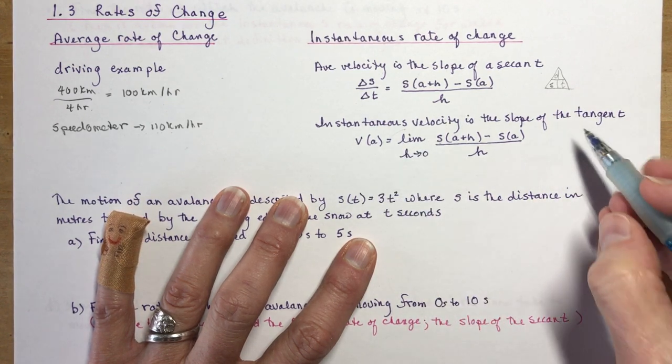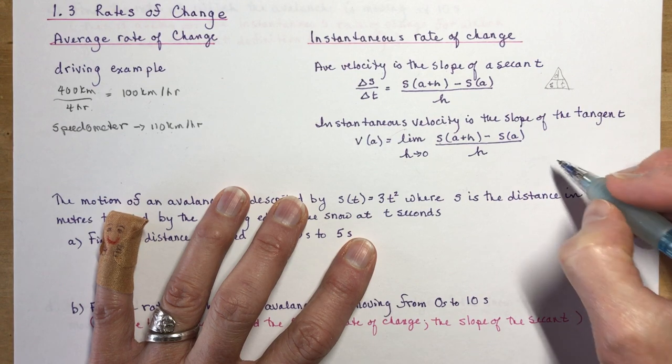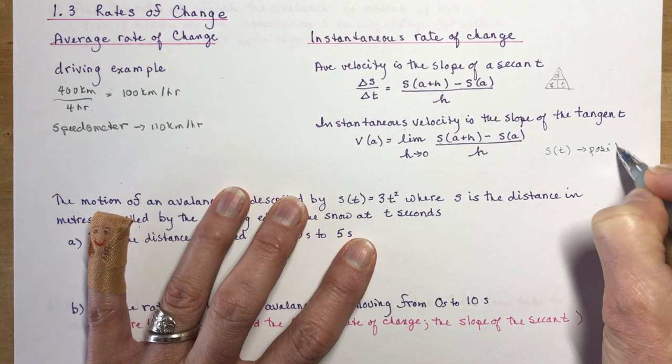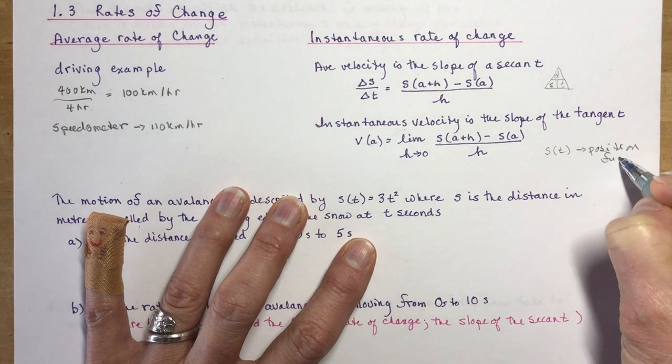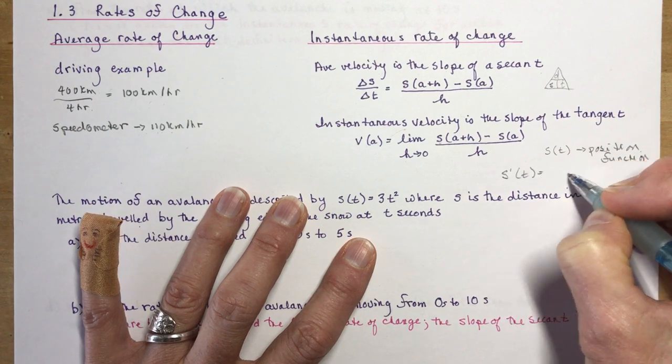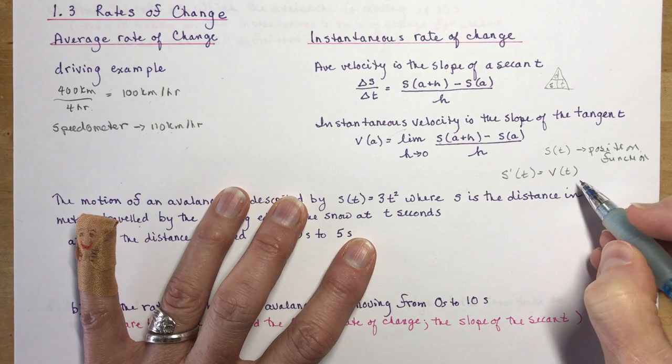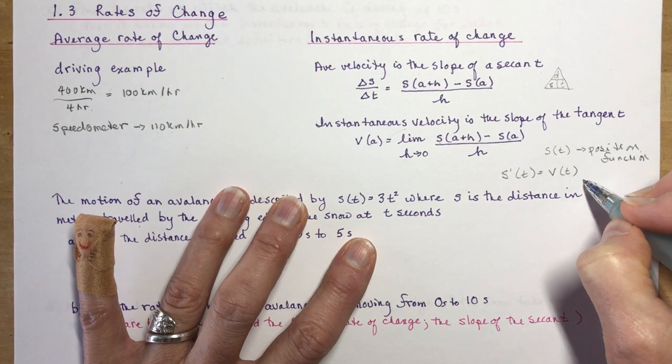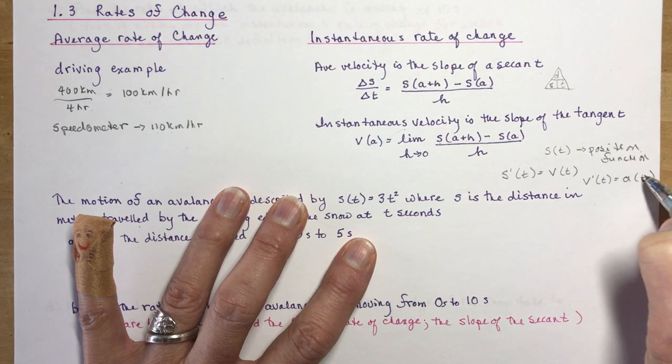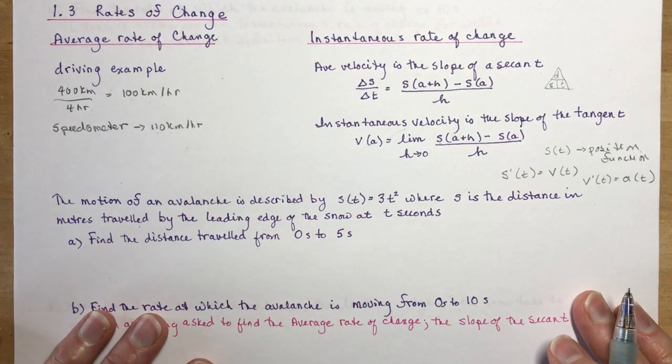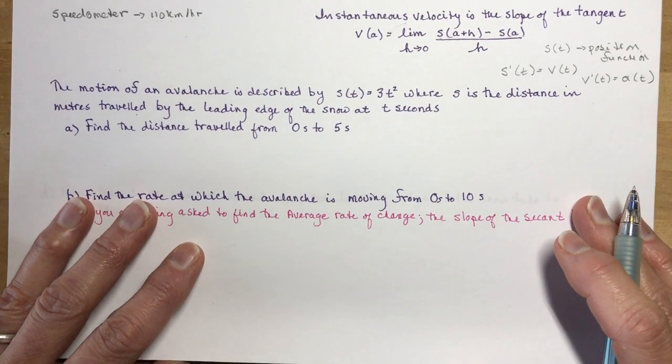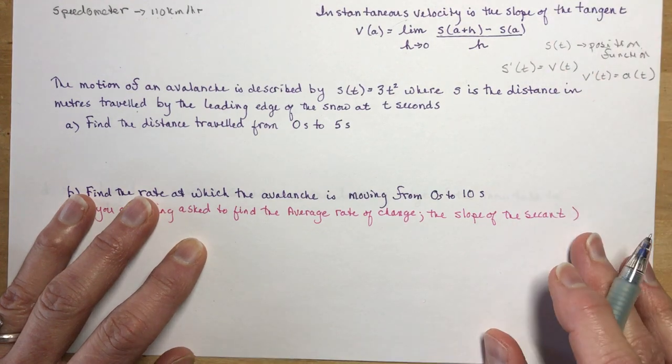It just so happens that the derivative of the position function, so if I give you the position function s(t), then s'(t) is going to be my velocity function. And we can go one step farther: if I take the derivative of the velocity function I'm going to get acceleration, and we'll talk more about that later on in the course.